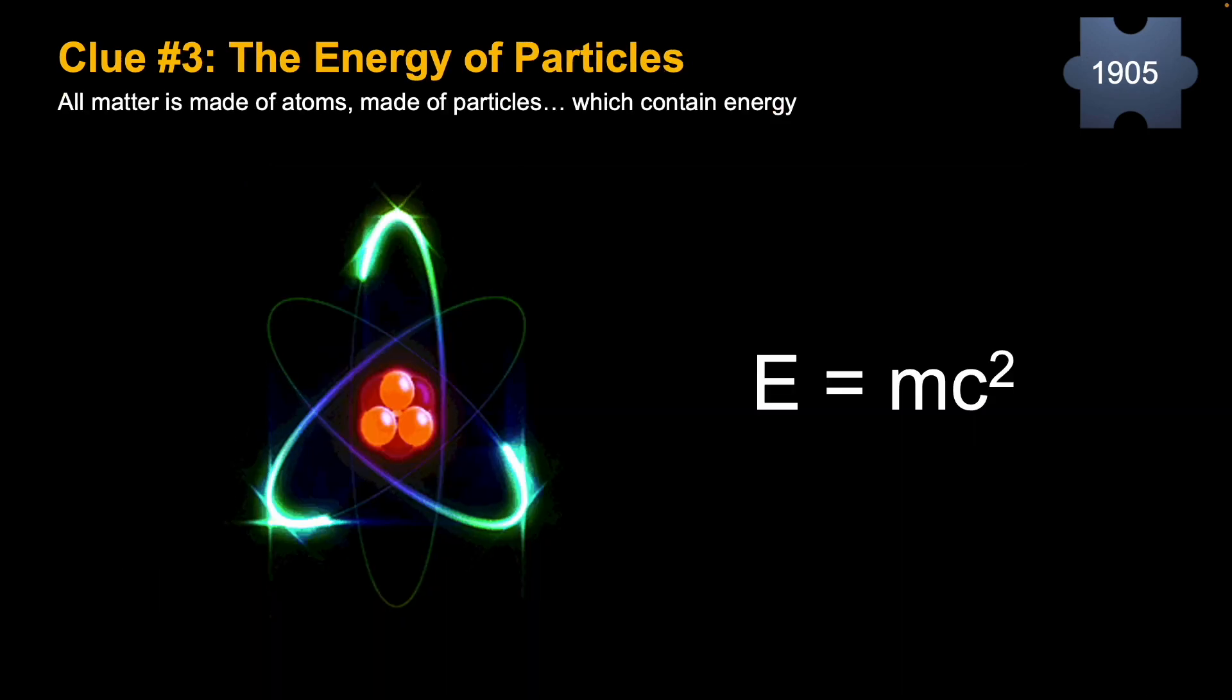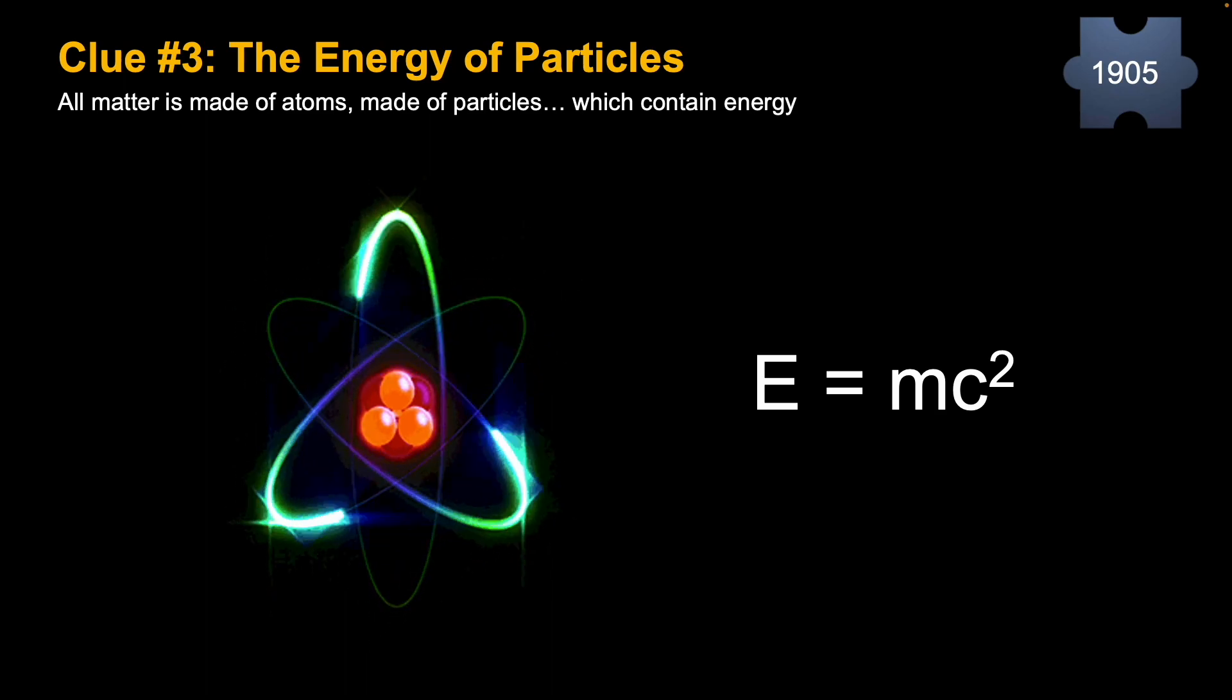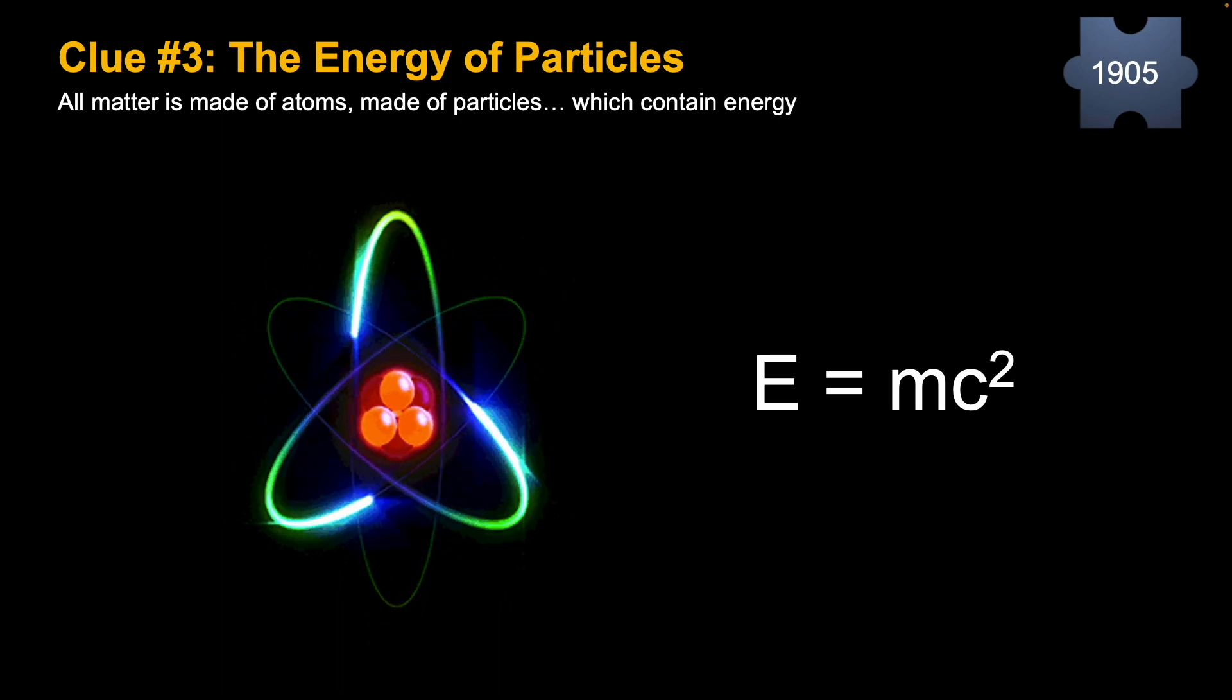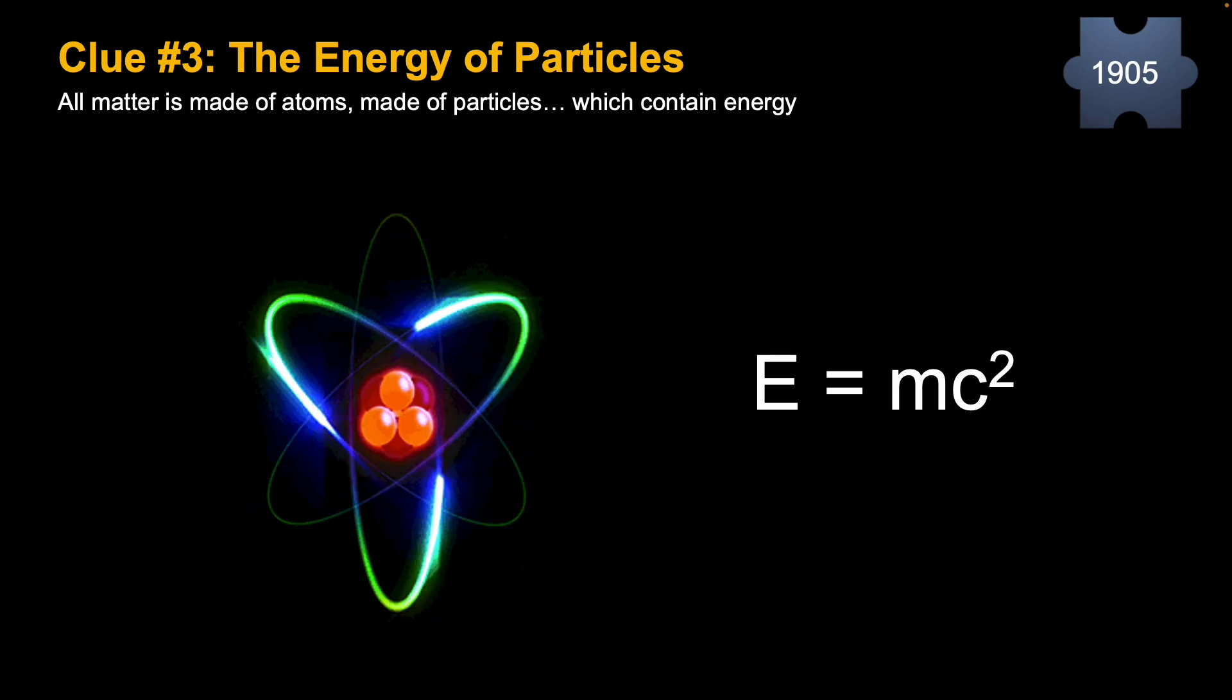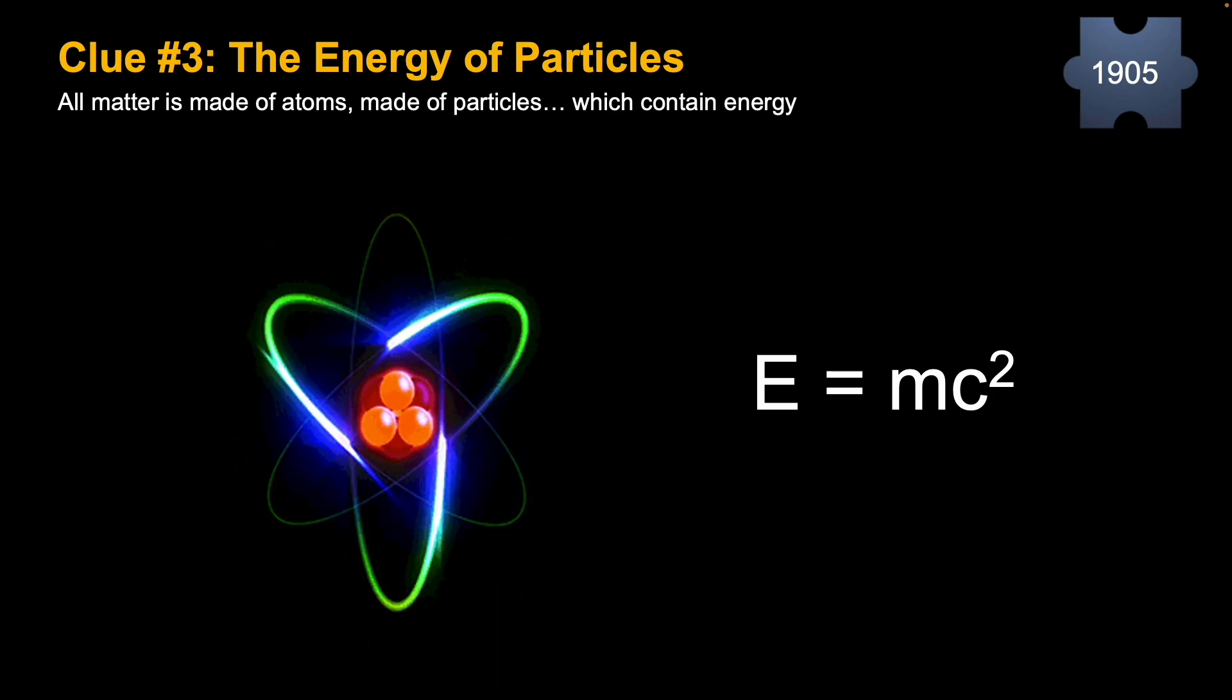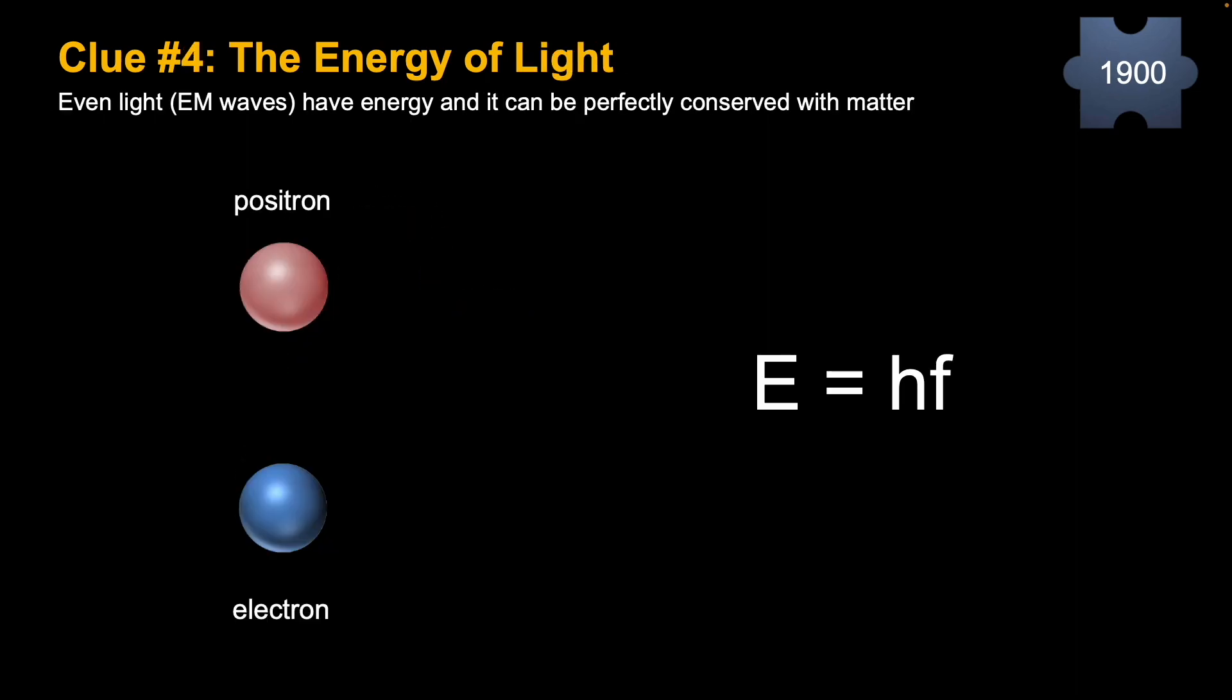Now let's fast forward to last century. Famous E equals MC squared, Einstein. All matter is made of atoms, which are made of particles, which contain energy—this is an important equation. So matter has energy. It might just be stored, but it still has energy, and so does light.